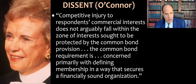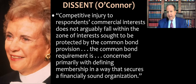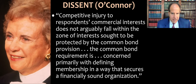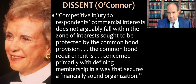The dissent's key quote: "Competitive injury to respondents' commercial interest does not arguably fall within the zone of interest sought to be protected by the common bond provision in the statute. The common bond requirement is concerned primarily with defining membership in a way that secures a financially sound organization." This is really useful for students understanding the zone of interest test — you have to look at what Congress was really trying to do with the statute, and the dissenters think Congress was trying to do something very different than what the majority thinks, which affects who falls within the zone of interest.